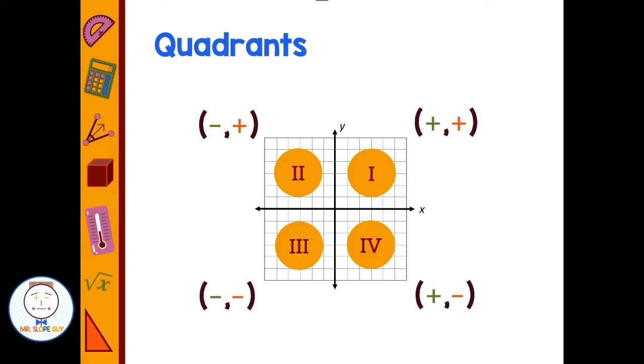So this kind of helps us know right away what part of the coordinate plane we would be graphing on. If we have both positive numbers we know we're going to be in quadrant I. If we have both negative numbers we know we're gonna be down in quadrant III. And the other two we have to be a little bit more careful. So quadrant II if we have a negative and a positive, and quadrant IV if we have a positive and a negative.